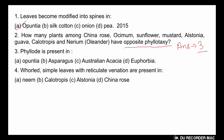In opposite phyllotaxy, two leaves are born on the opposite sides of a single node. It is of two types: opposite superposed and opposite decussate.